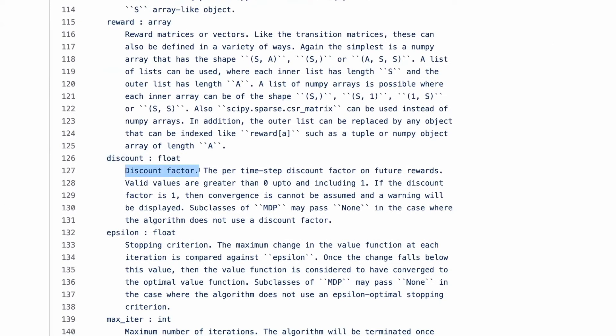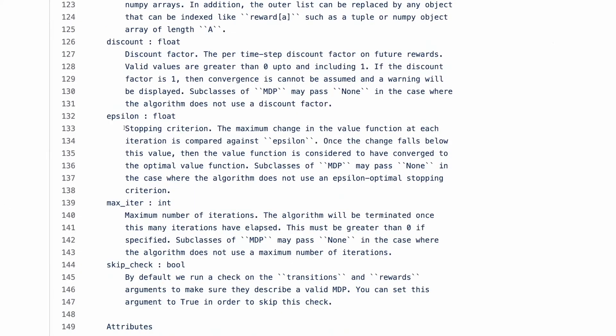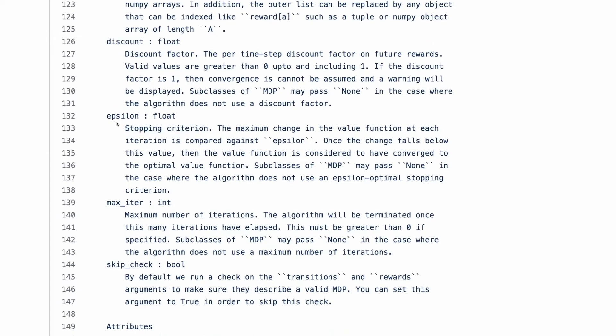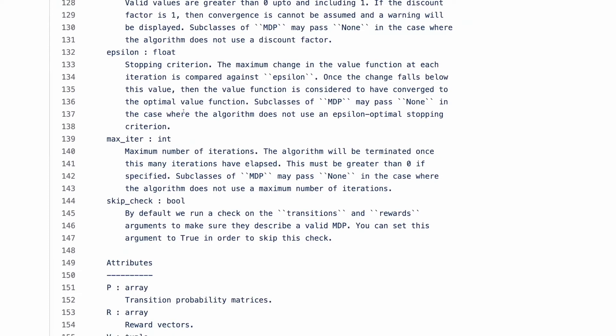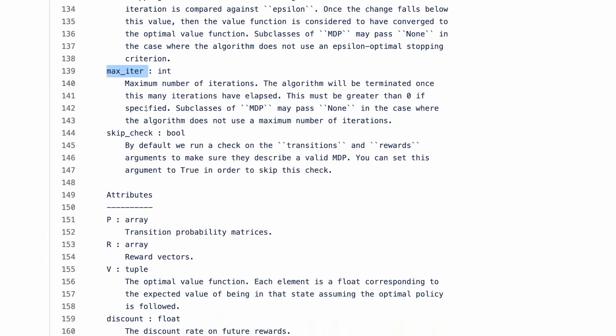Discount. Discount factor helps us to compute future rewards. Epsilon is a stopping criterion. We compute the change in past and new best values of states. And if we haven't achieved any meaningful change on the new episode, we stop the training. This is a limit for maximum number of iterations.